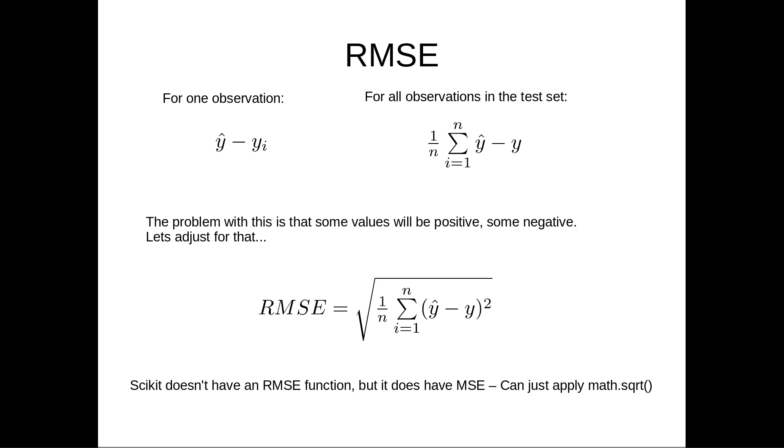So the way I can compensate for that is I can take this and I can square it. And so if I square that value, and then take the average, and then in the very end I can take the square root of that, that gives me the root mean squared error.